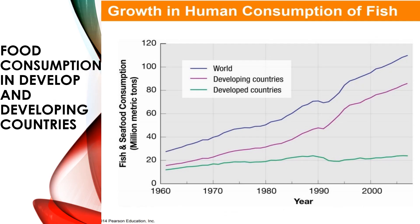In terms of fish consumption, the growth of human consumption of fish shows that developed countries — shown in green — consume much less compared to developing countries, and the combined total is higher. One of the main reasons for the increase in food consumption is the rise in global population. As global population and rates of consumption increase, there is a need to increase water, food, and energy supplies, but to do so in a sustainable manner to meet the needs of all people.